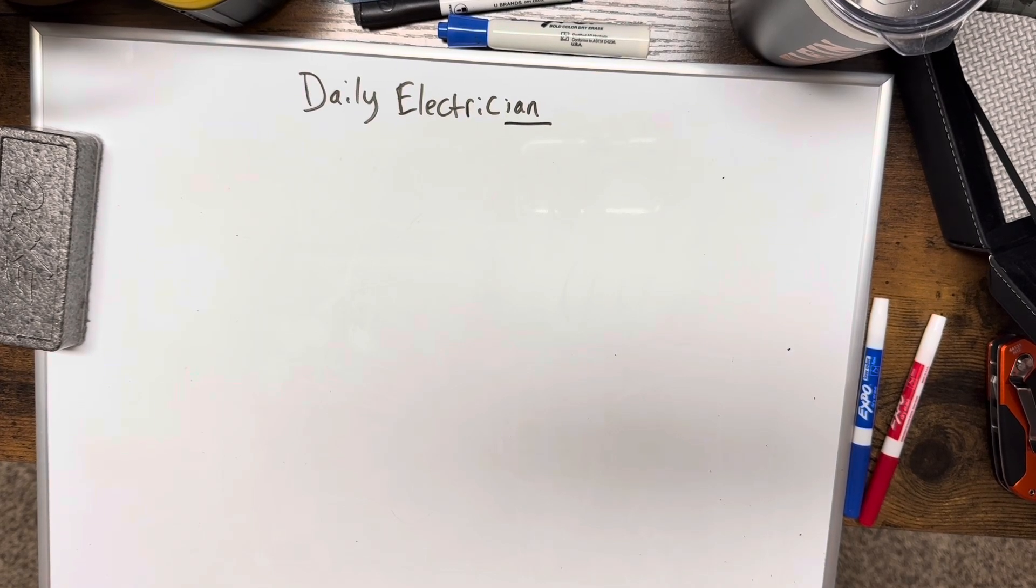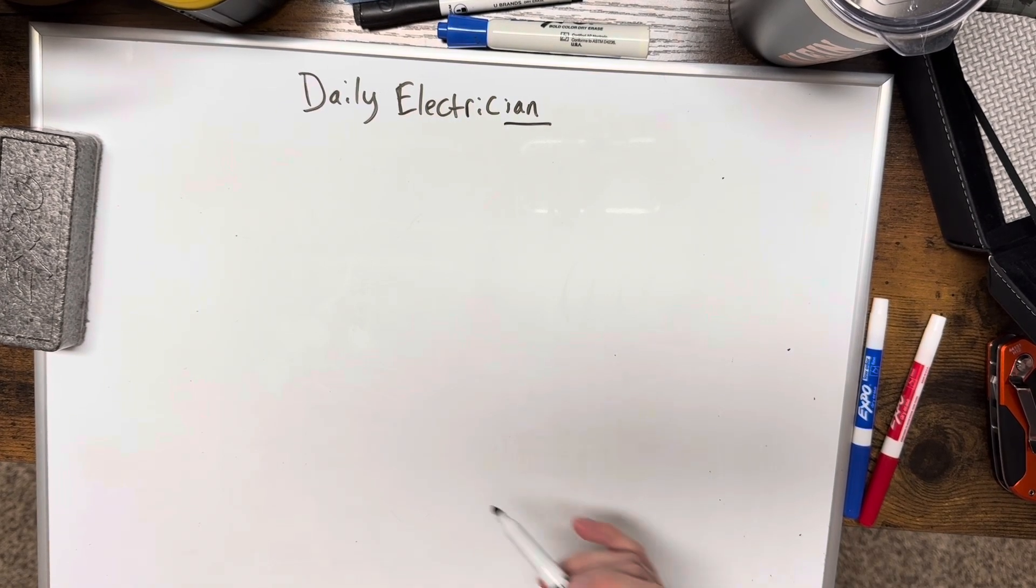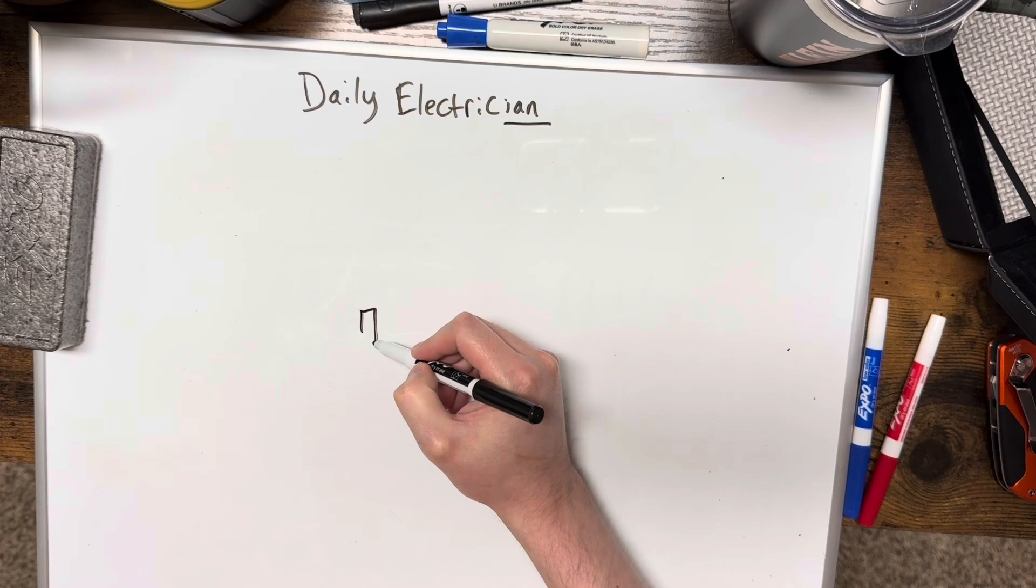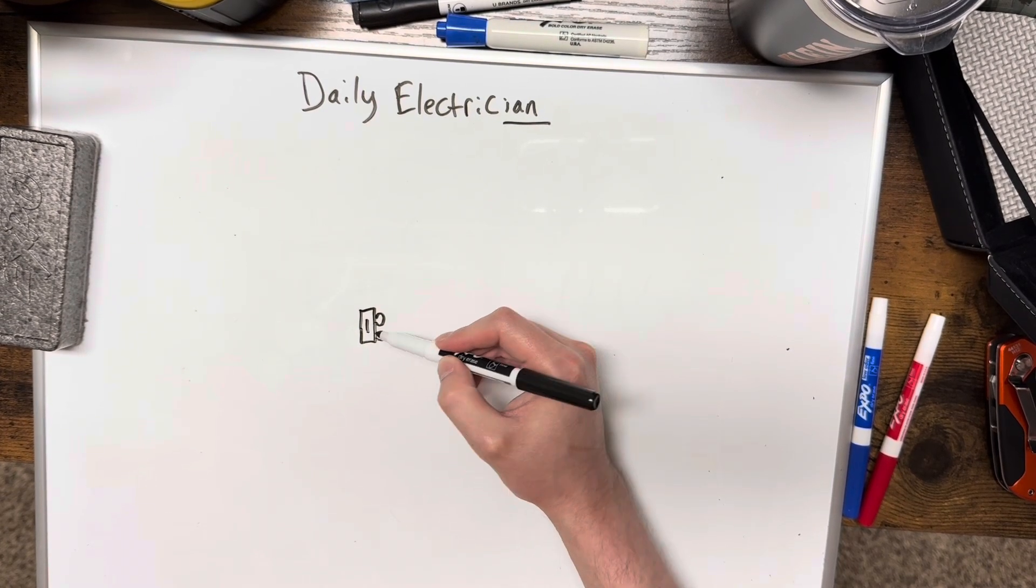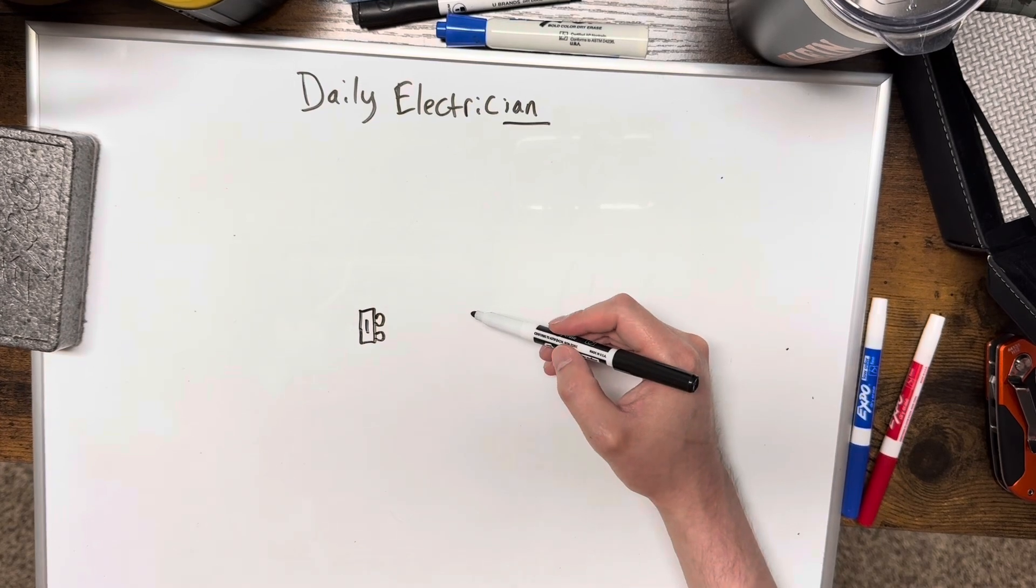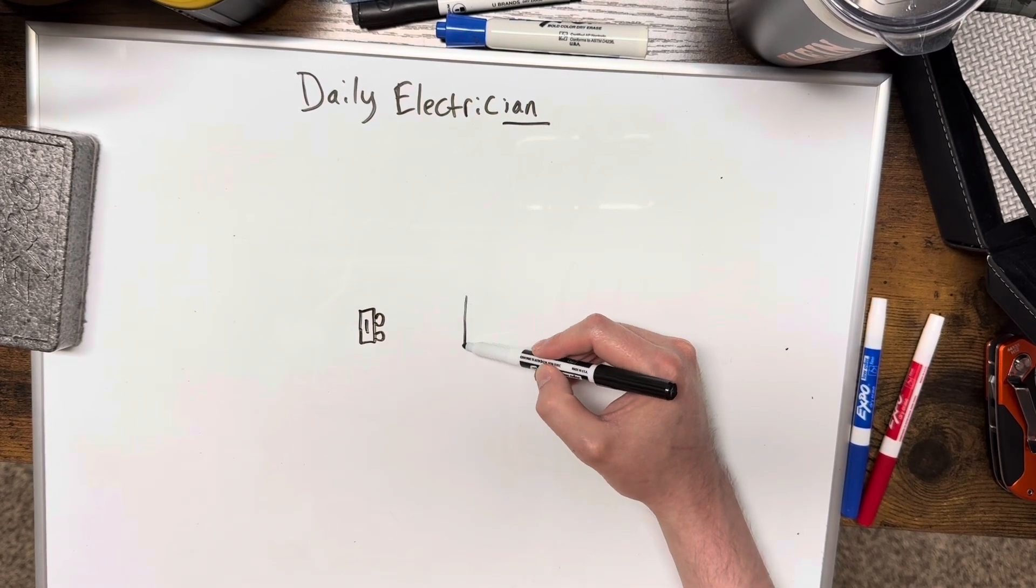First of all, you're going to have your doorbell and that's going to have two little wires to attach to, and then you're going to have the doorbell chime.